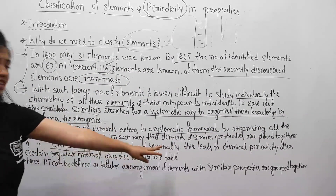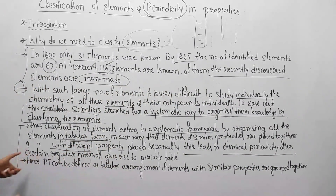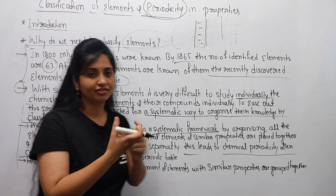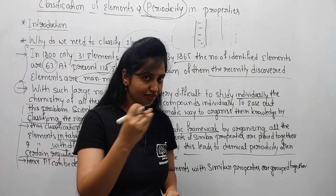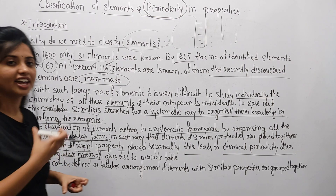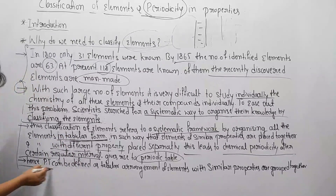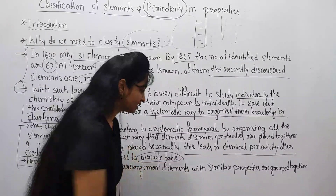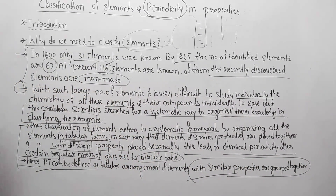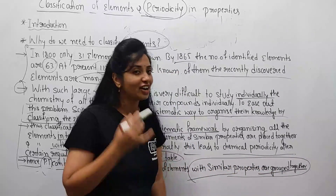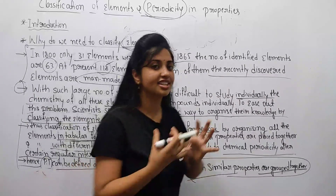This leads to chemical periodicity. Just as different scientists gave their ideas about the structure of an atom at regular intervals until we arrived at the modern atomic model, different scientists contributed knowledge about the classification of elements at regular intervals, until finally we got our periodic table. The periodic table is defined as the tabular arrangement of elements in which elements with similar properties are grouped together.